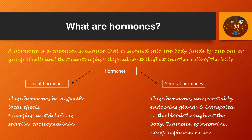Local hormones have specific local effects — they act only in the area where they are released. Examples of local hormones include acetylcholine, secretin, and cholecystokinin.